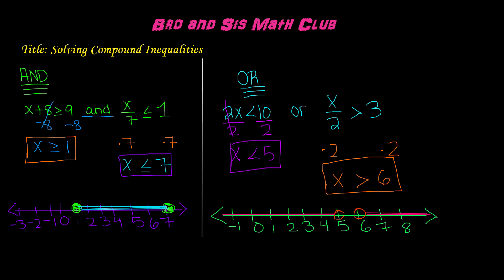And so this is how you solve compound inequalities. When you have an 'and' compound inequality, the solution is going to be in between the points. When you have an 'or' compound inequality, it can go in opposite directions. This is it for this video. Thanks for watching, and we will see you guys next time. Bye!